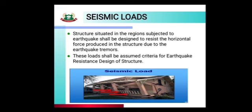Next is seismic load. Structures situated in regions subjected to earthquake shall be designed to resist the horizontal force produced in the structure due to earthquake tremors. Seismic load कहाँ consideration में आएगा — for example, structure ऐसे area में situated है जहाँ पर earthquake आता है, उस समय horizontal force produce हो जाता है structure में due to earthquake। These loads shall be assumed as criteria for earthquake resistance design of the structure. Forces are caused due to horizontal as well as vertical movement of the building.